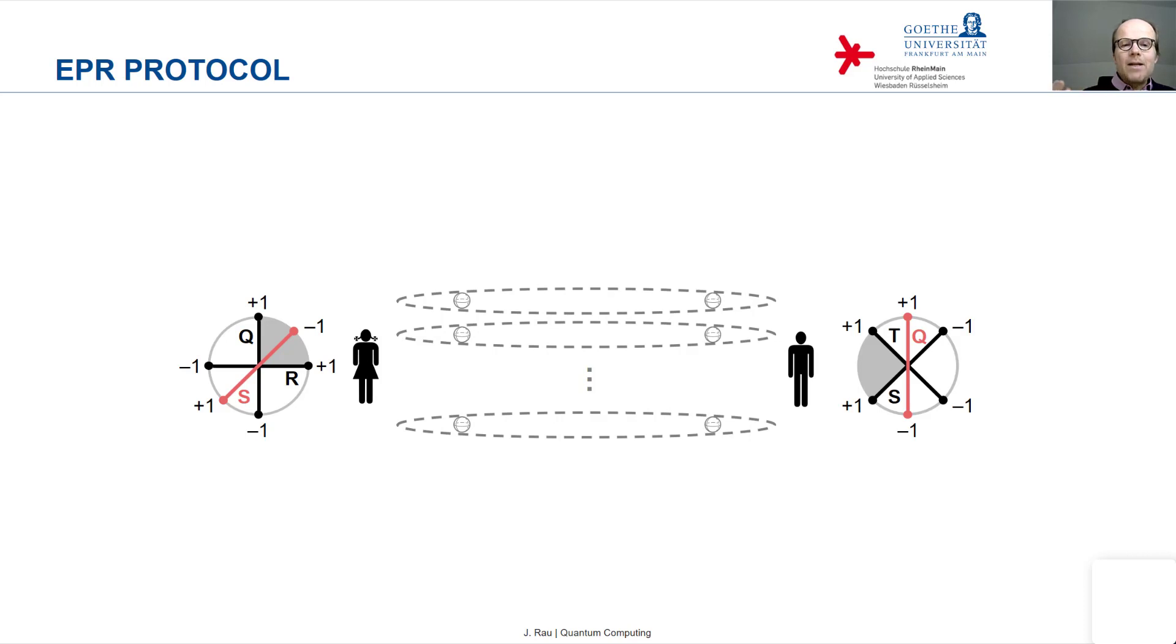And that already proves the security of the EPR protocol. So it uses two very fundamental results here. It uses Bell's inequality, or the violation of Bell's inequality, and the result about the Tsirelson bound that we saw previously.